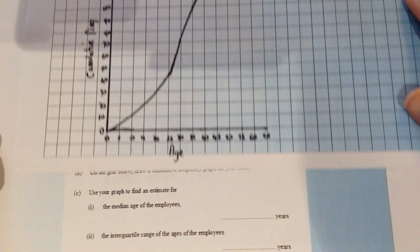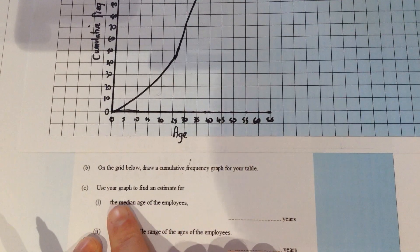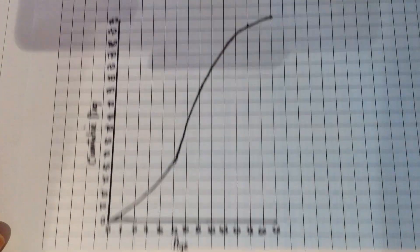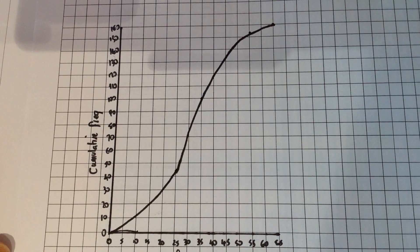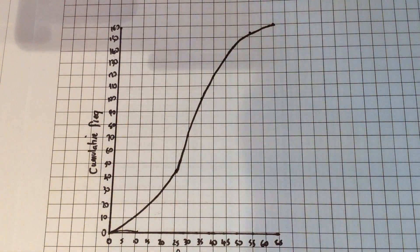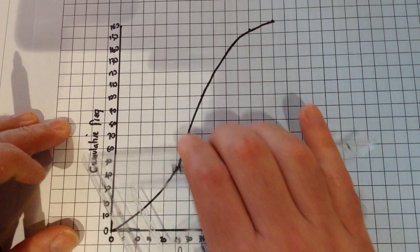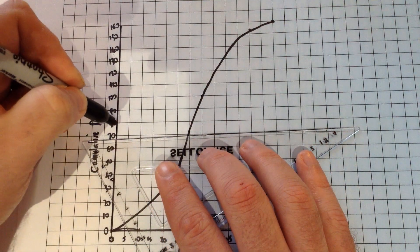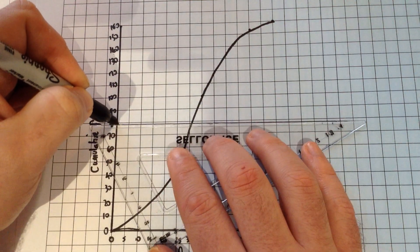So the two questions we've been asked from this: we need to find the median age of IT employees. Well, the median is the middle person. If this graph represents 160 people, the middle person is going to be the 80th one.